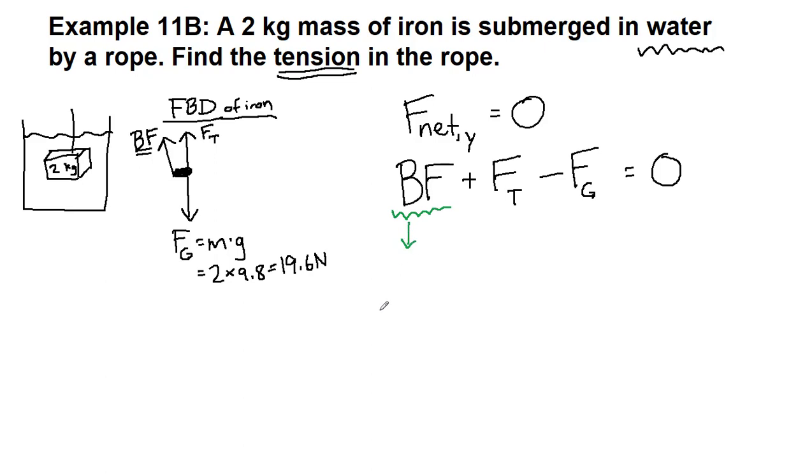The buoyant force is equivalent to the density of the fluid times the volume that we're displacing with our object, in this case the iron, times the force of gravity, or sorry, the acceleration of gravity, g.